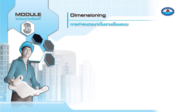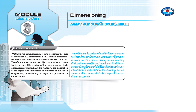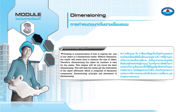Module 3: Dimensions — General Concept. Drawing is communication of how to express the size of any object in two-dimensional media. Without dimension, the reader will waste time to measure the size of an object. Therefore, dimensioning the object by numbers is easier for the reader.